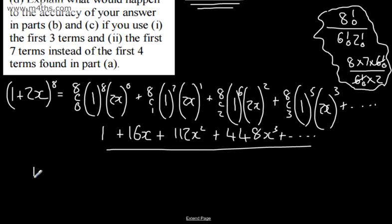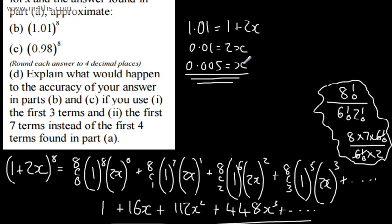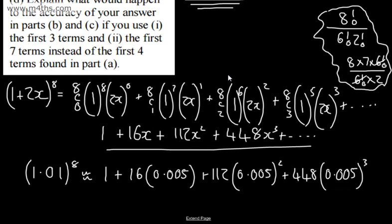All I'm going to do is substitute this in. 1.01^8 will be approximately equal to 1 + 16(0.005) + 112(0.005)^2 + 448(0.005)^3. So I've simply found a suitable value for x and we're going to put it in. Remember, this is an approximation. The more terms we include, the more accurate it will be.